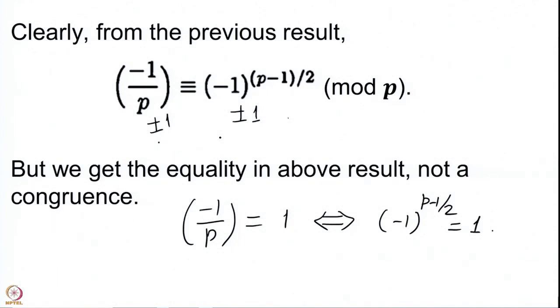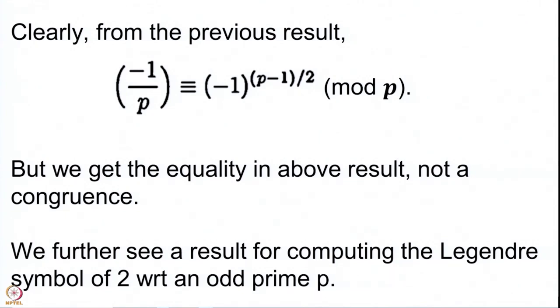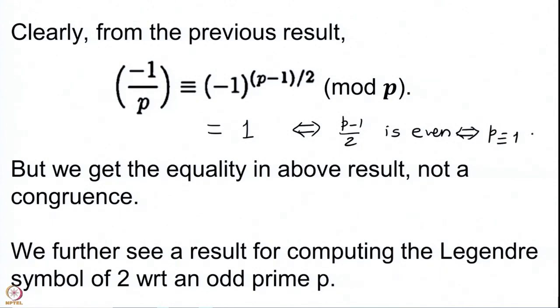We can compute the Legendre symbol of minus 1 with respect to any prime simply by observing whether p minus 1 by 2 is even or not. This is 1 if and only if p minus 1 by 2 is even, which is true if and only if p is congruent to 1 modulo 4. Among odd primes, p is either congruent to 1 modulo 4 or congruent to 3 modulo 4. Whenever p is congruent to 1 modulo 4, minus 1 is a quadratic residue, and whenever p is congruent to 3 modulo 4, minus 1 is a quadratic non-residue.